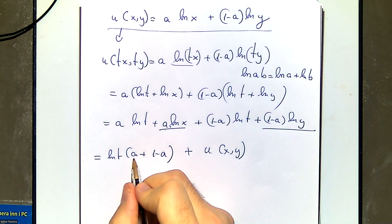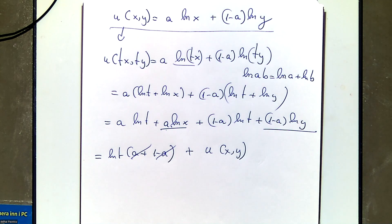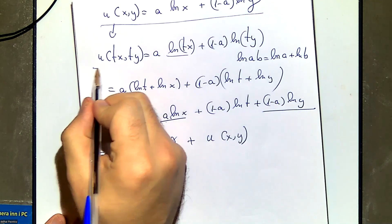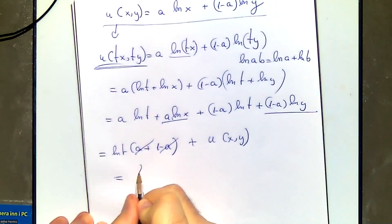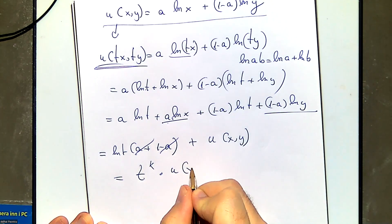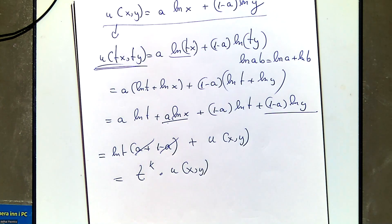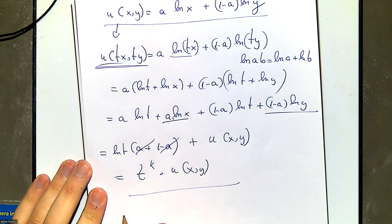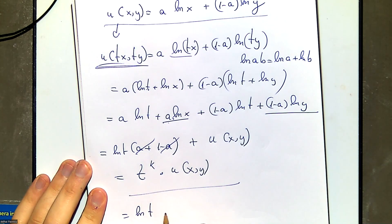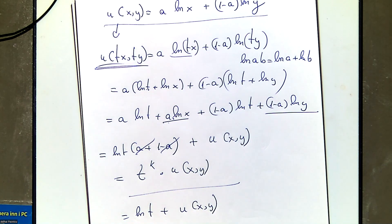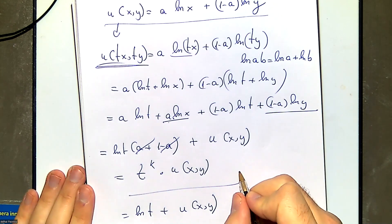Now I ask: is this function homogeneous? Does u(tx,ty) look like t^k times u(x,y)? No, of course not. This is what it's supposed to look like; this is how it actually looks. Clearly they're not the same - it's impossible. So in this case I can just say: not homogeneous.